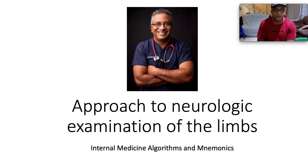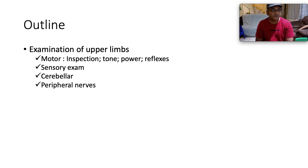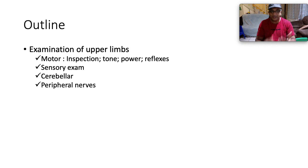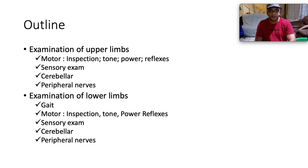What's up everybody, Dr. Ryan here. Thank you for joining me as we navigate into examination of the neurological system, specifically looking at how to examine the limbs neurologically. This is the outline of our talk today: examination of the upper limbs covering motor examination including inspection, tone, power, and reflexes; sensory examination; cerebellar and peripheral nerve examination. Then we head to the lower limbs covering gait, motor, sensory, cerebellar, and peripheral nerves.